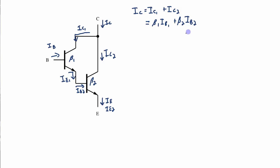Now remember IB2, which is over here, is the same as IE1. So I can rewrite this as beta 1 IB1 plus beta 2 IE1.